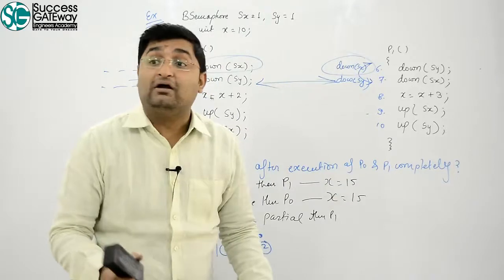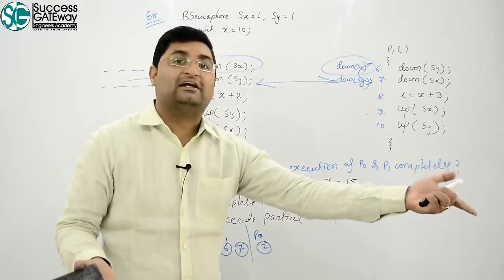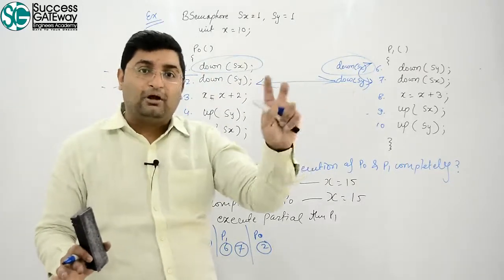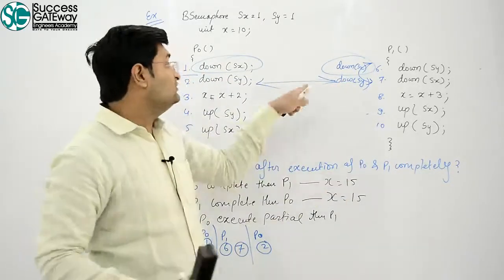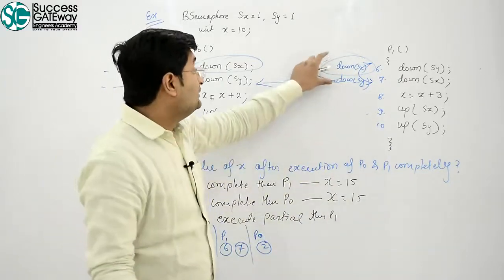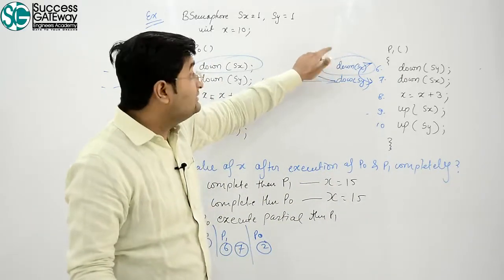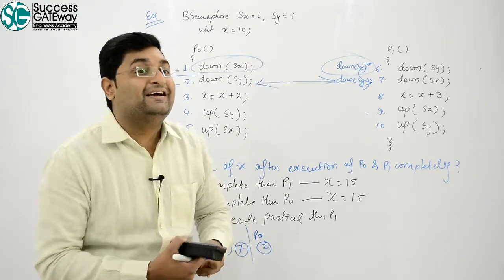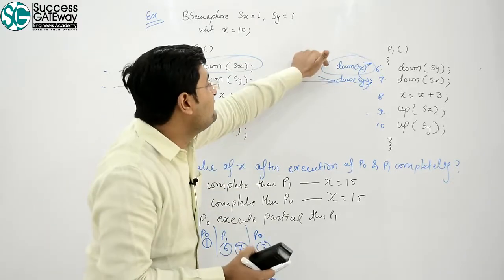If this pair is successful, then Sy should be available. If this happens and this happens, it means it can never happen that after downing Sx, P1 blocks on Sy, and after downing Sy, P0 blocks on Sx. This won't happen. In one of them, this pair will be successful only if Sy value is 1.